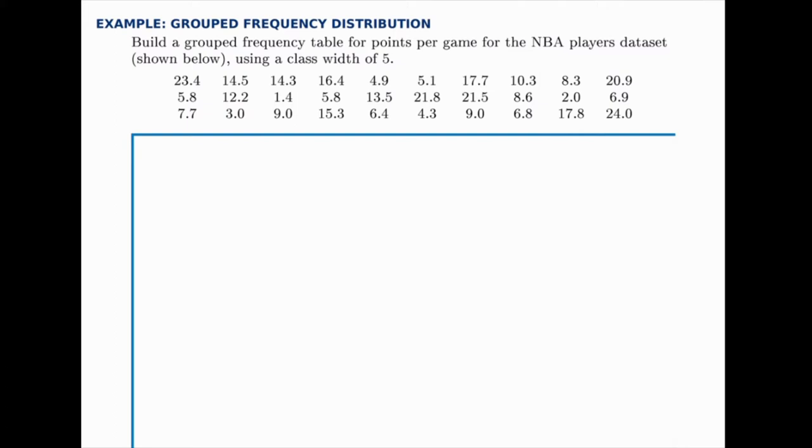So in our frequency table, the first column will be points per game. And our first category, the first class, will start at 0 and we'll go up to 5.